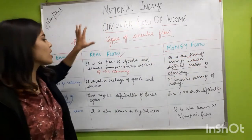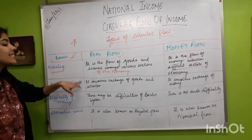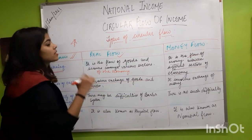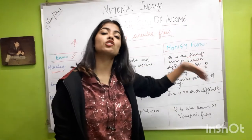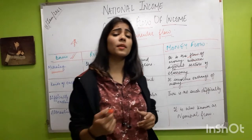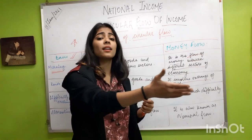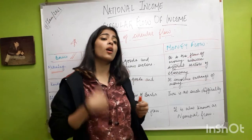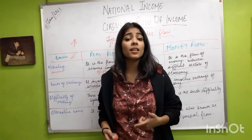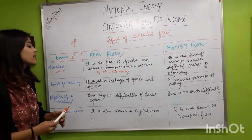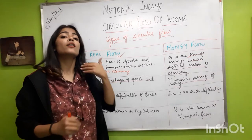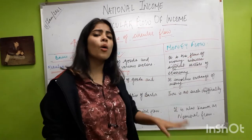Real flow involves the exchange of goods and services, while money flow involves the exchange of money. When it comes to the difficulty of exchange, real flow may suffer from the difficulties of the barter system — such as the double coincidence of wants and storage problems. Money flow, however, has no such difficulty.